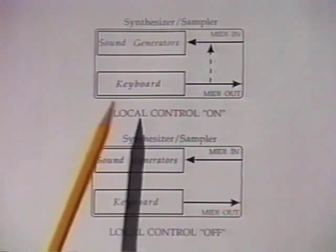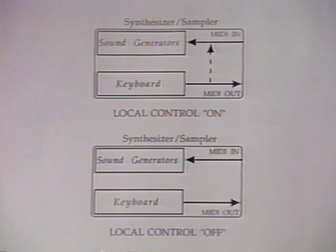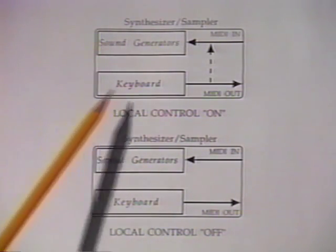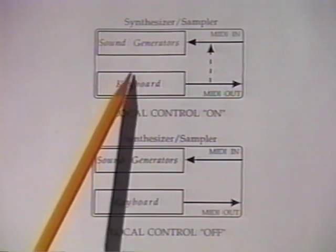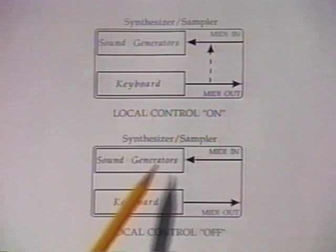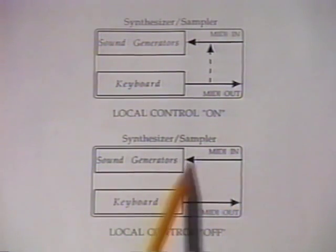Diagram 5 shows how local control works. Local control is a feature found inside a keyboard that also has sound generators — like the EPS, which has built-in sound generators plus a keyboard. With local control on, there's a conceptual path from the MIDI out to the MIDI in: a bridge that lets the keyboard drive the sound generators as well as send signals out the MIDI out connection. With local off, that connection is broken — the keyboard sends out the MIDI out, but the sound generators will only play what's coming in through the MIDI in. So if you step up to a keyboard and nothing happens, check whether local control is on or off.